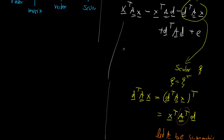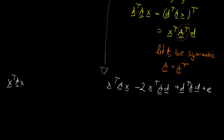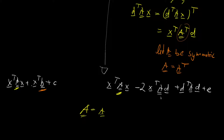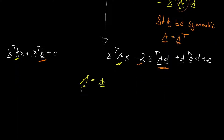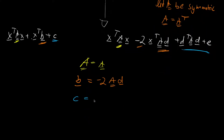Getting back to our original expression x transposed A x plus x transposed b plus c, and comparing coefficients: A equals A — obvious. Looking at the coefficient that x transposed is multiplied with, b equals minus 2 times A times d. And lastly, scalar c equals d transposed A d plus e.